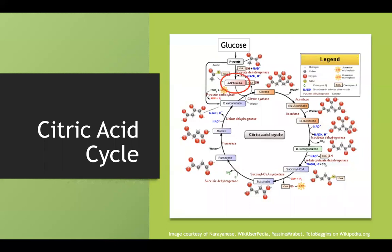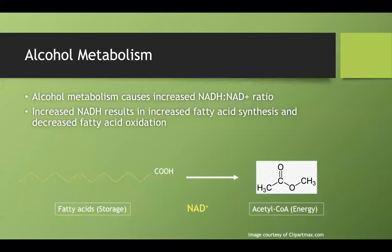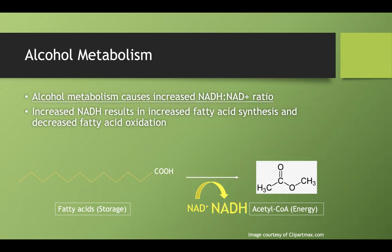All this extra NADH increases fatty acid synthesis. To oxidize stored fatty acids into usable acetyl-CoA for the citric acid cycle, you need to convert NAD+ to NADH. But with a huge buildup of NADH already present, there isn't enough free NAD+ — so the reaction can even reverse, storing acetyl-CoA as fatty acids instead, giving you increased fatty acid synthesis and decreased oxidation.